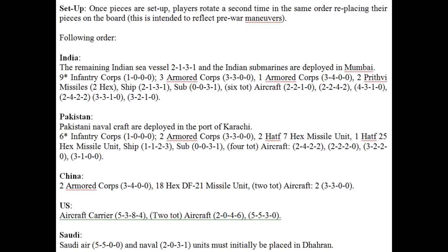For setup, the Indians set up first, followed by Pakistan — deploying their respective ground, air, and sea units. Sea units are set up in Karachi and Mumbai respectively. Air units can be set up no more than one per city, with each city representing a network of air bases and airfields. China sets up next, then the US places its two aircraft somewhere in the GCC — Saudi Arabia, UAE, Oman, or Qatar. The Saudis deploy their units in Dhahran in the Persian Gulf.